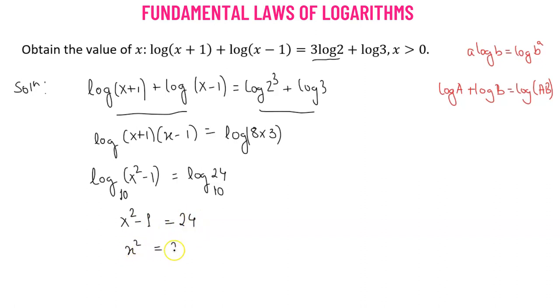Now, that means x squared is equals to 25. Taking the square root, x is equals to plus or minus 5. But we're given the condition here that x value is greater than 0 and that's always true.